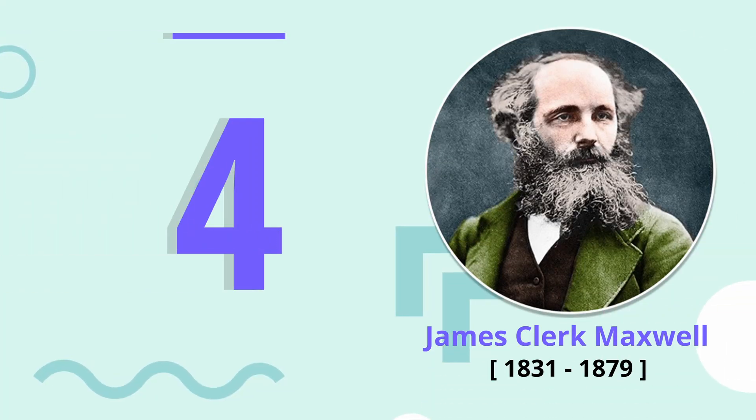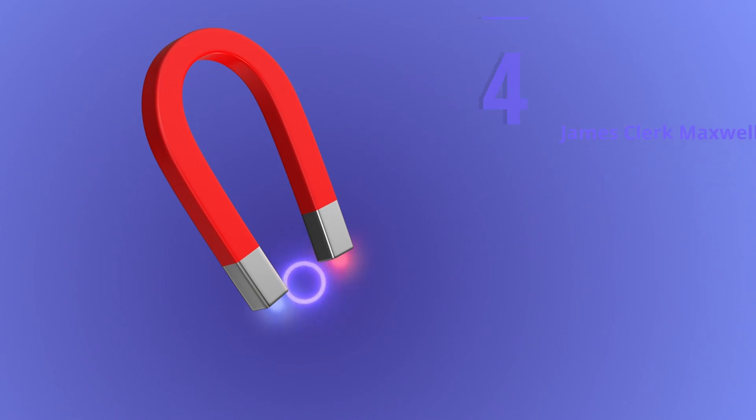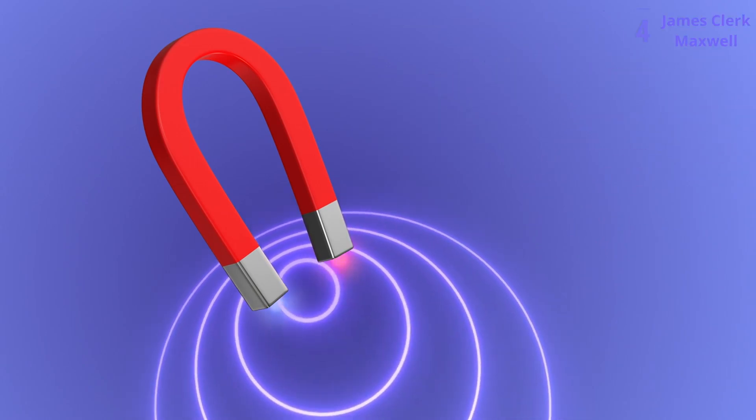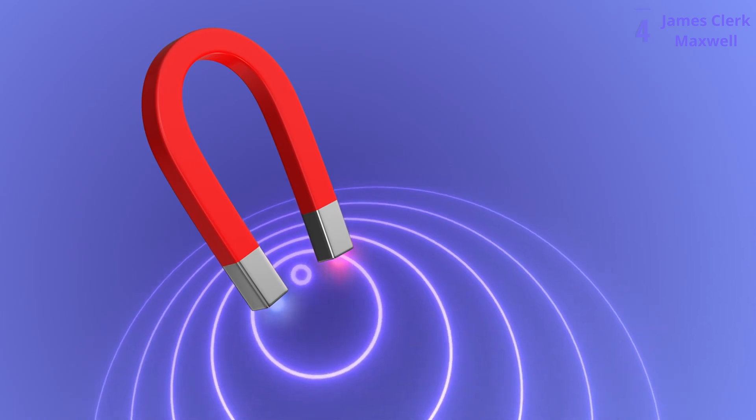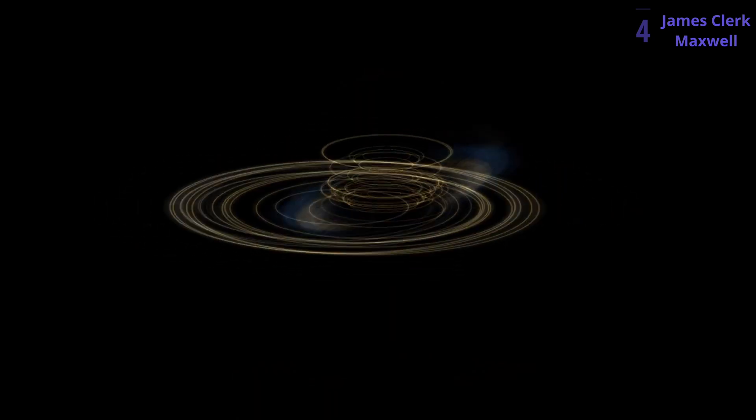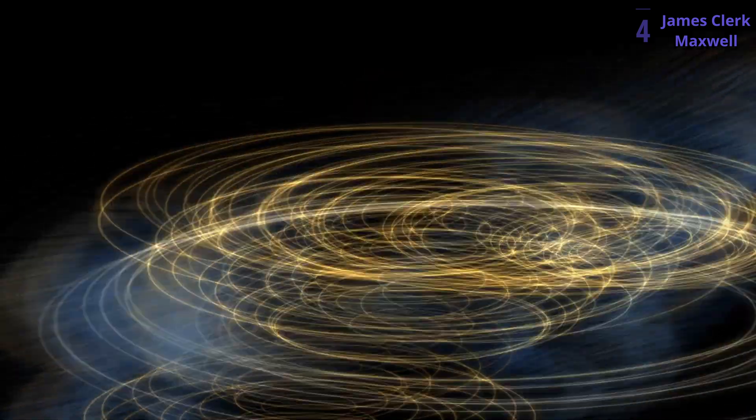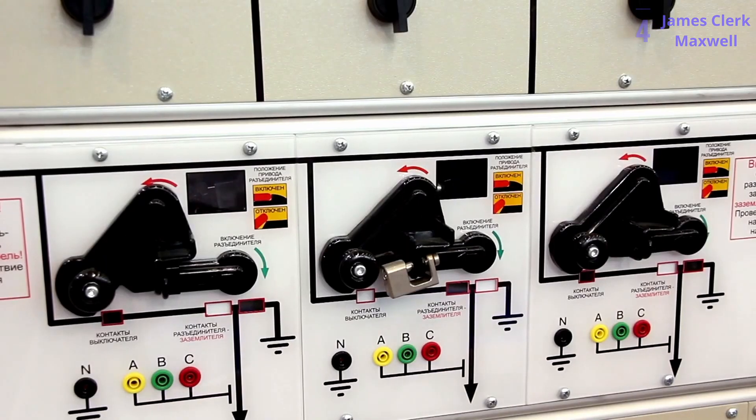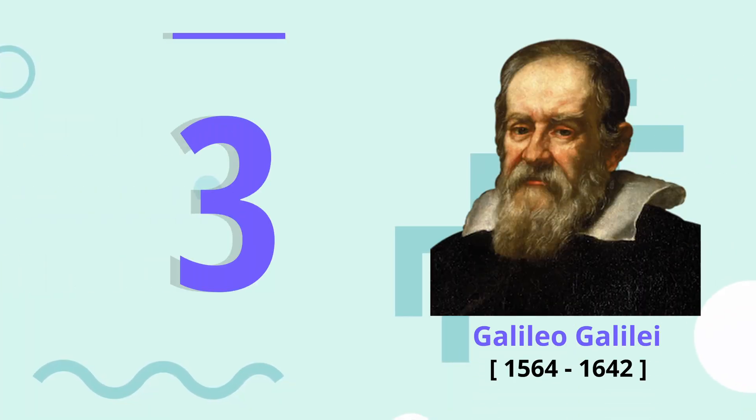Physicist at number 4, James Clerk Maxwell. Imagine a world without electricity? Maxwell, a physics magician, unified electricity and magnetism as the electromagnetic field. This theory laid the foundation for light bulbs, radios, smartphones, and the power grid. His equations even predicted electromagnetic waves, later proven real by Hertz, paving the way for radio, TV, and Wi-Fi. Maxwell's work revolutionized technology and continues to shape our modern world.